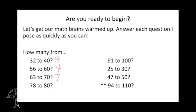How many from 78 to 80? Did you say two? How many from 91 to 100? I bet you said nine. On all of these we're thinking about our small facts to 10. We know that 1 plus 9 gets us to 10, so because we know that, we know that 91 plus 9 gets us to 100. One more — how many from 25 to 30? That's an easy one — five! Nice job. And how many from 47 to 50? I'm sure you said three.